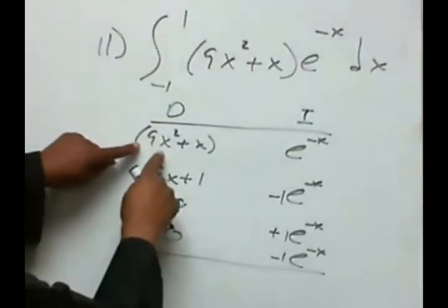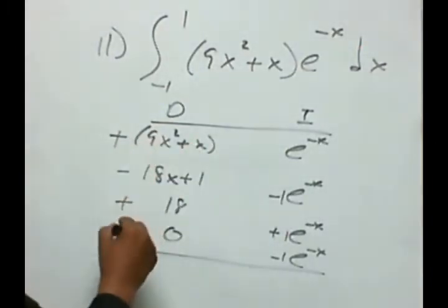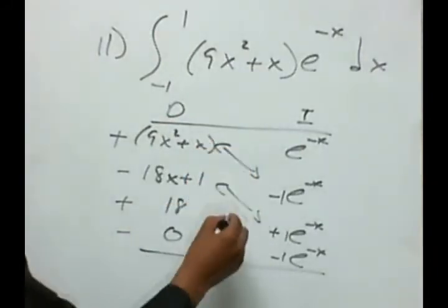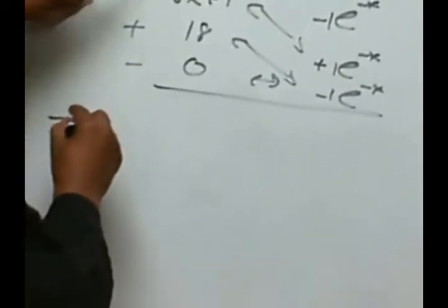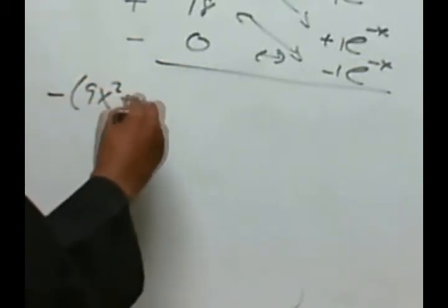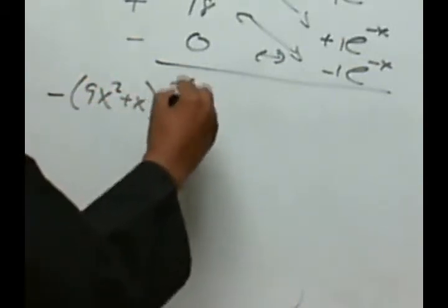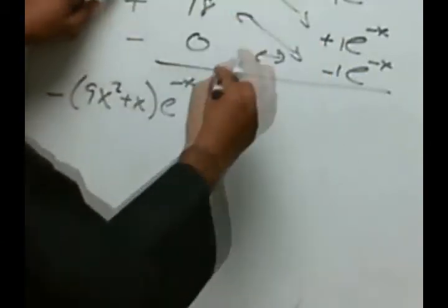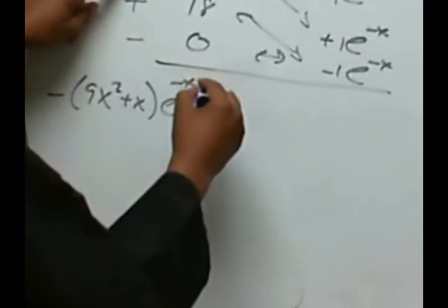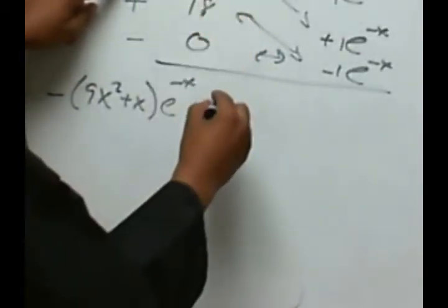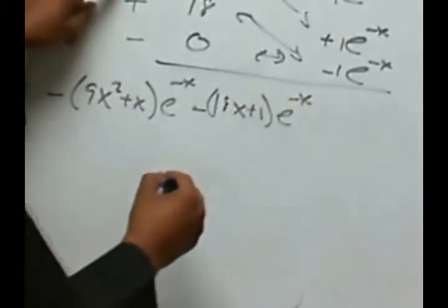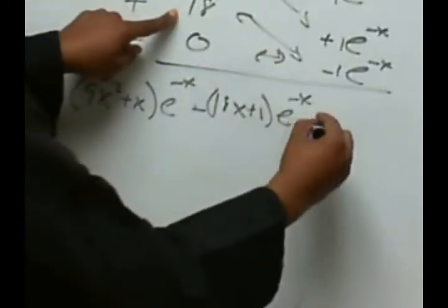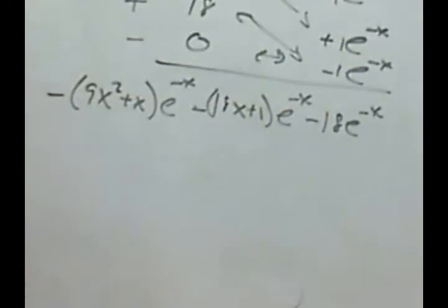Now let's put in the combinations, with signs plus, minus, plus, minus. Combining these pairs, we have a negative here, and then 9x squared plus x times e to the negative x. Then this combination, which has a negative 18x plus 1, times e to the negative x. And this combination with a negative and an 18, times e to the negative x. We won't put a c here because it will cancel out.